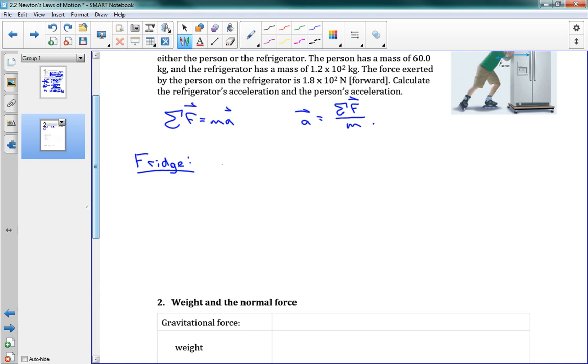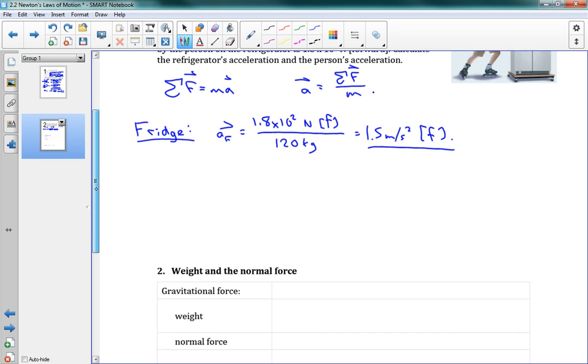Now I can do for the person. Let's do for the fridge first. For the fridge, we're told that we want to find the acceleration of the fridge is equal to this force, 1.8 times 10 to the 2 newtons forward, divided by the fridge's mass, 120 kilograms. And this equals 1.5 meters per second squared forward. There's our answer to that question.